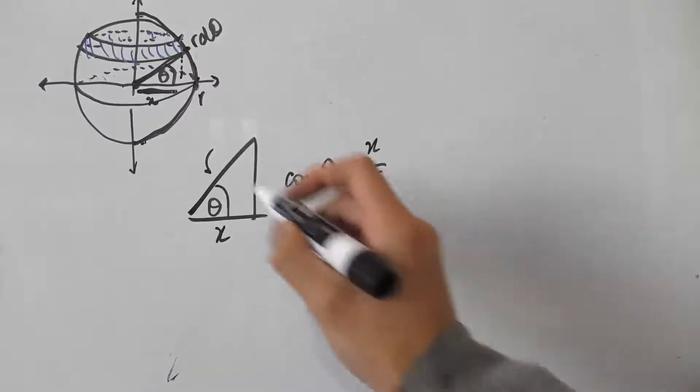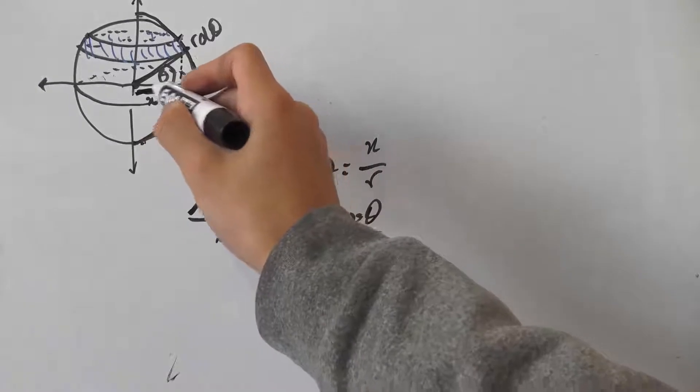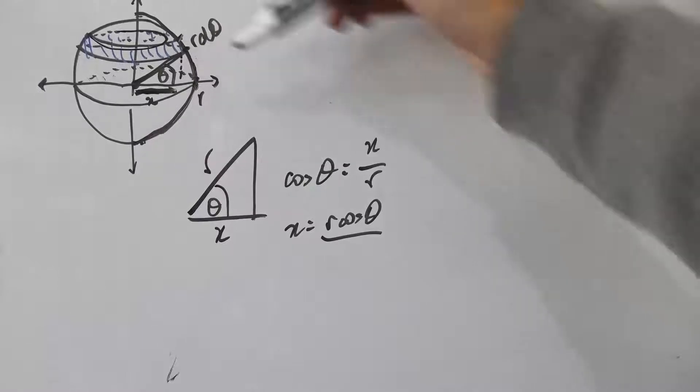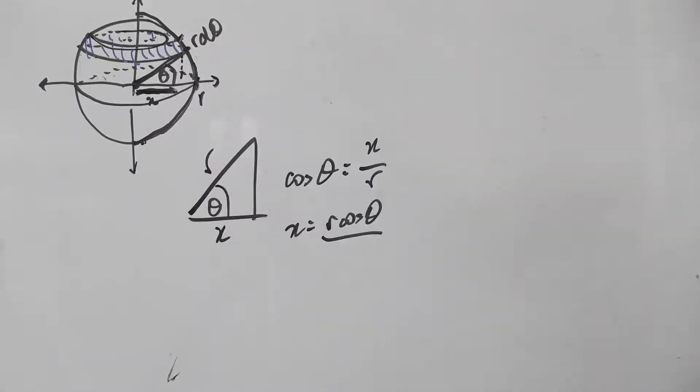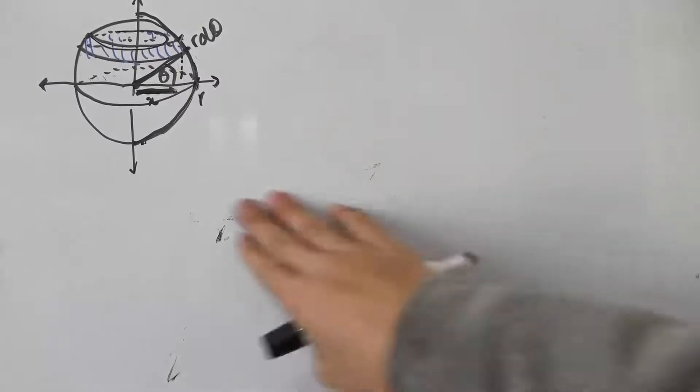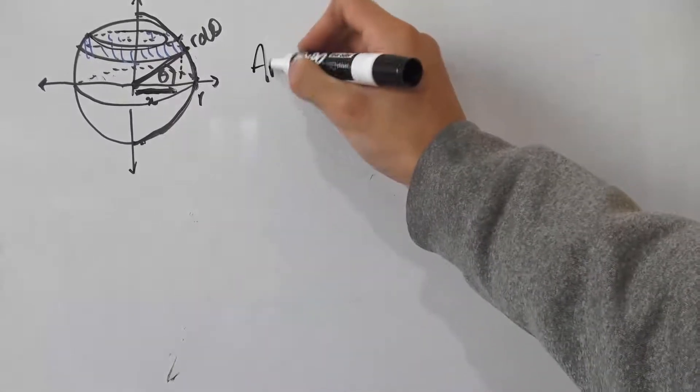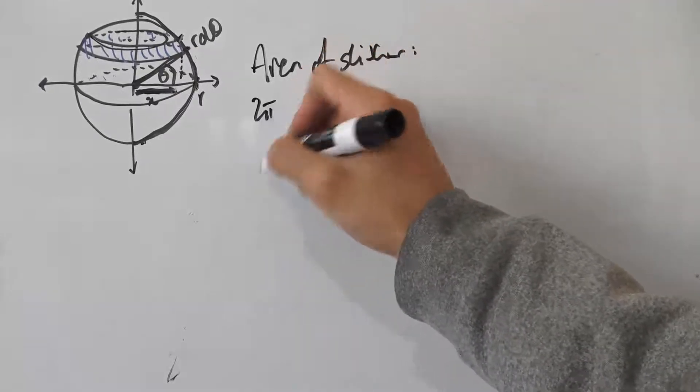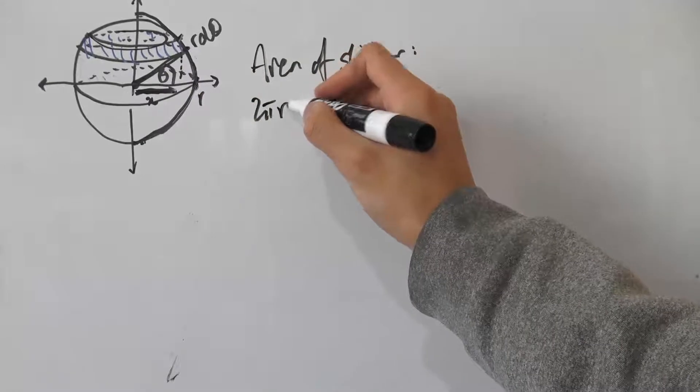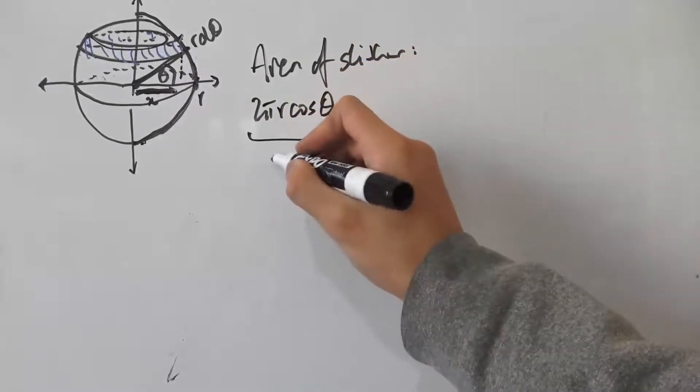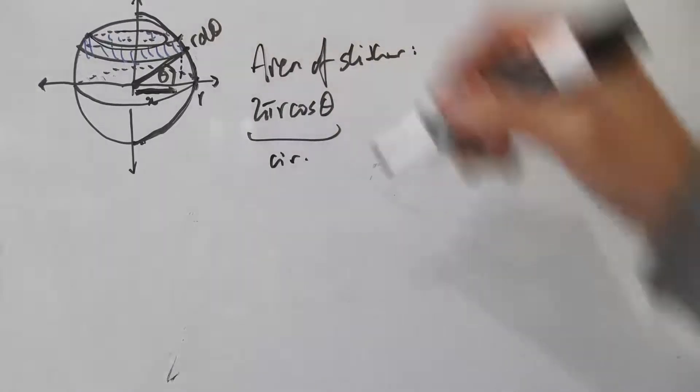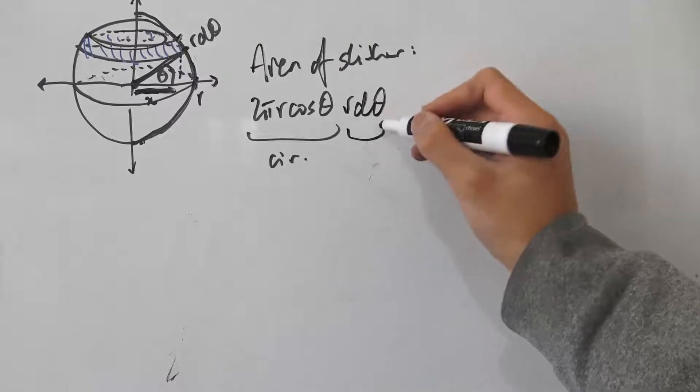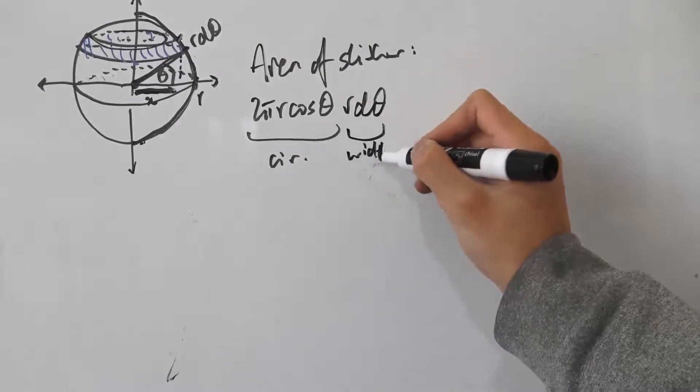Alright, so r cos θ is the radius of each of these little slithers here, but we want to find the circumference. We can just simply multiply that by 2π. So now we have the area of the slither. That's just 2π times r cos θ (the circumference of each slither) multiplied by rdθ (the width of each slither).